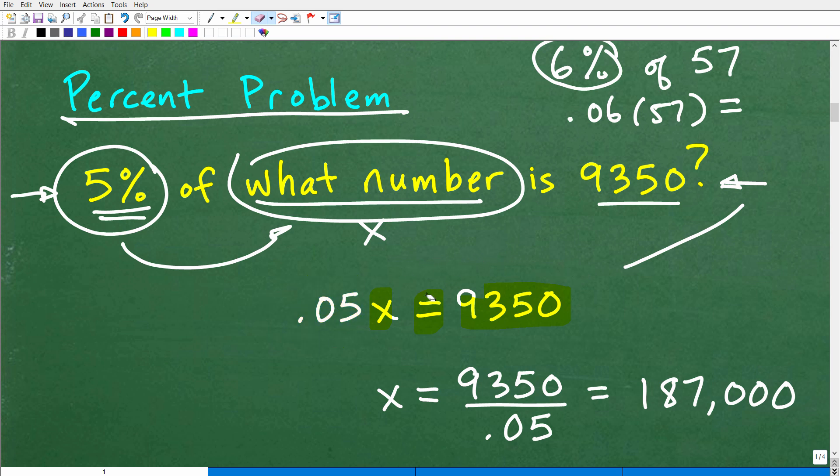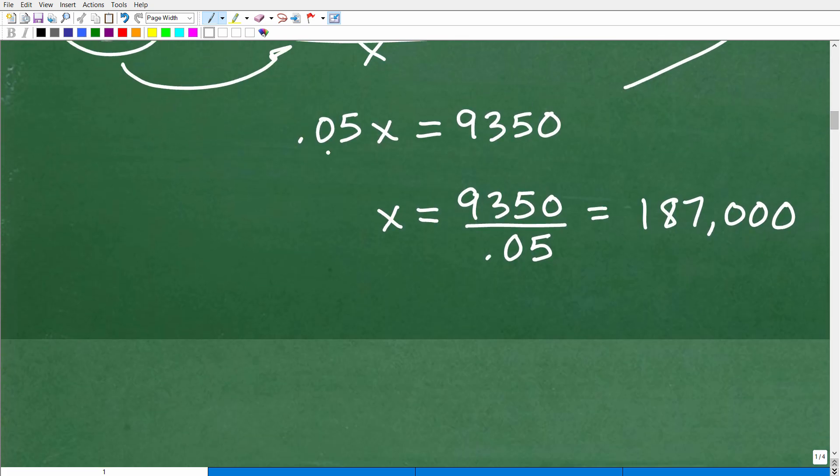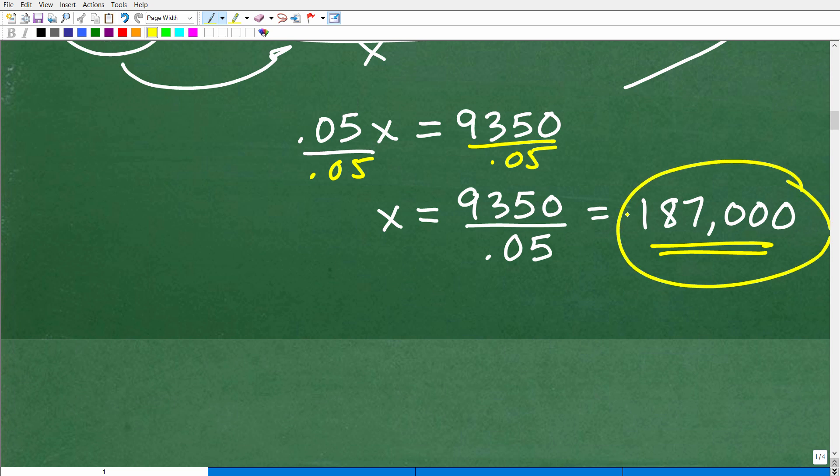At this stage of the game, all we need to do is to solve for X. To solve for X here, all we have to do is simply divide both sides of the equation by 0.05. We get our calculator out, take 9,350, divide by 0.05, and X is going to be equal to 187,000. And of course, that is in dollars. It's $187,000.